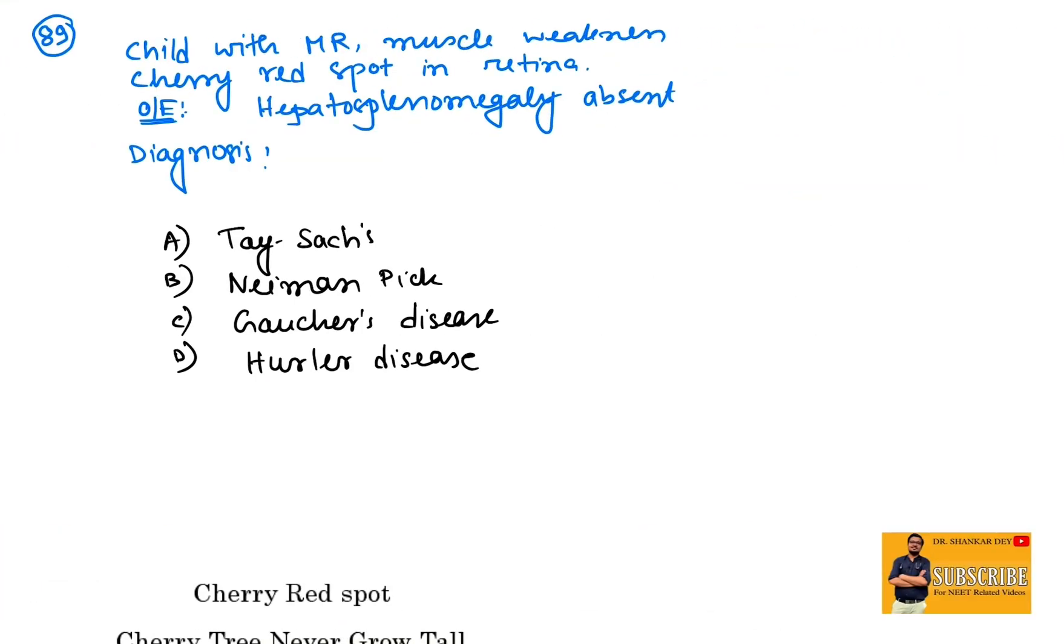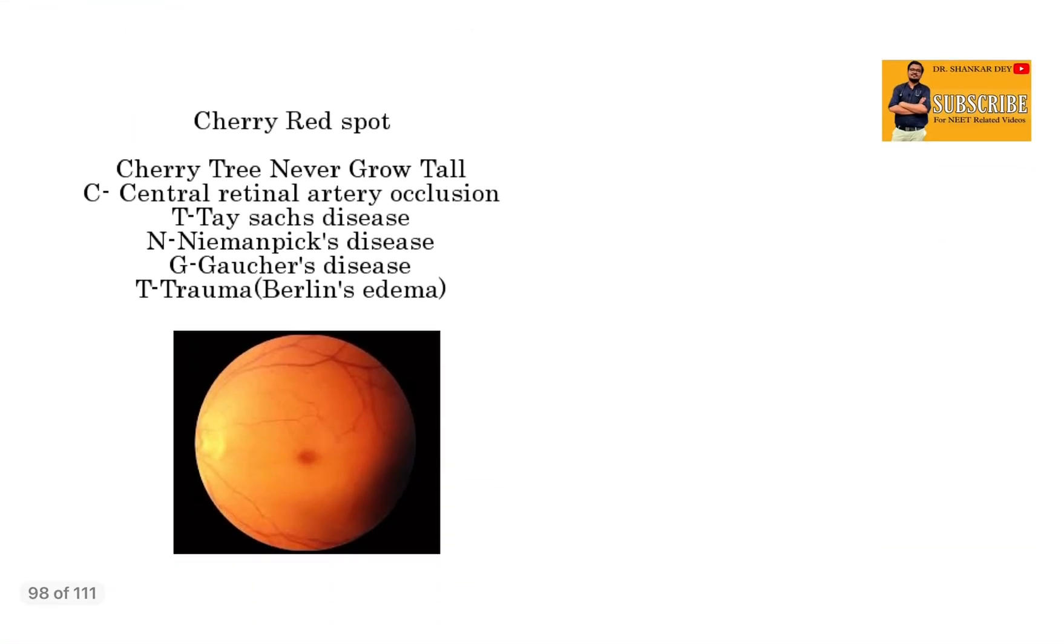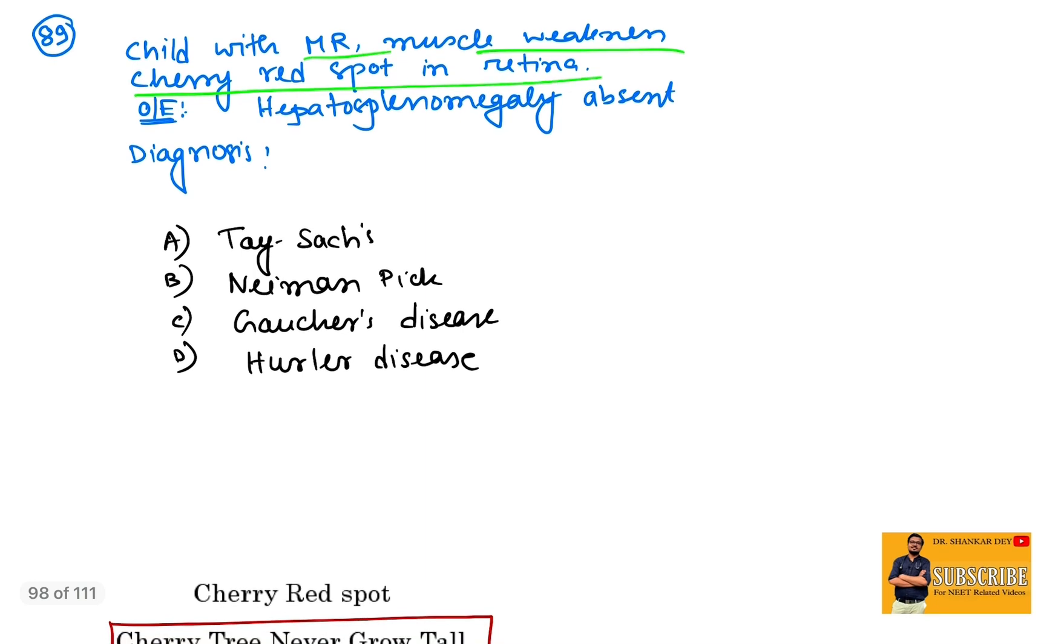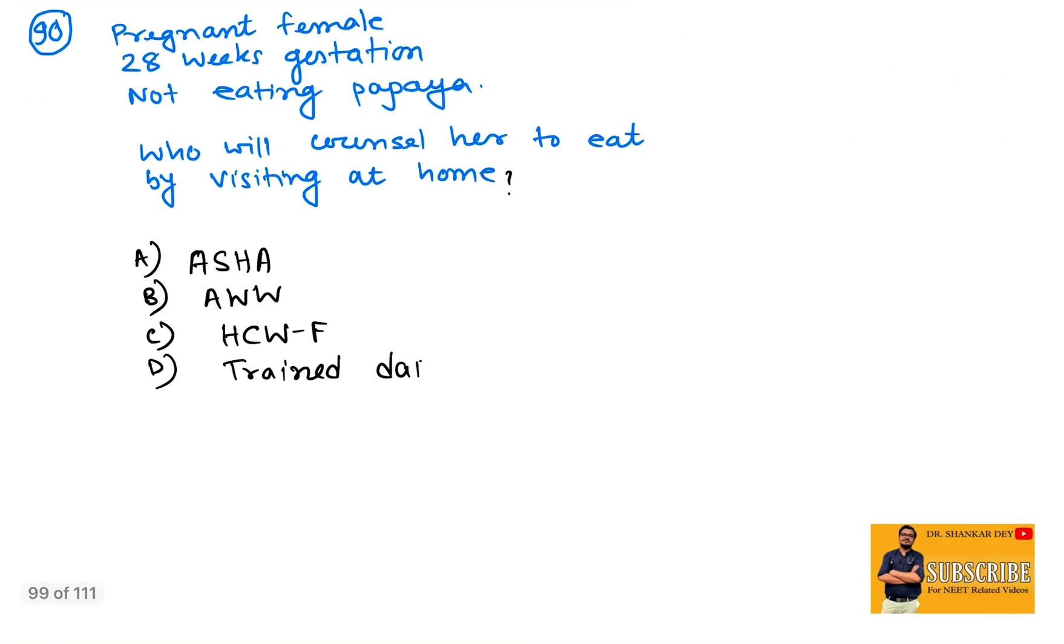Coming to question number 89: child with mental retardation, muscle weakness, cherry red spot in the retina on examination, no hepatosplenomegaly—diagnosis? As all of you know, cherry red spot is seen in this mnemonic: cherry tree never grows tall in—central retinal artery occlusion, Tay-Sachs disease, Niemann-Pick, Gaucher, trauma. But the question asks about cherry red spot without hepatosplenomegaly. As all of you have seen, in Tay-Sachs it is also cherry red spot seen, and in Niemann-Pick, Gaucher as well. As there was no hepatosplenomegaly, the option will be Tay-Sachs, because in Tay-Sachs disease there will be no hepatosplenomegaly.